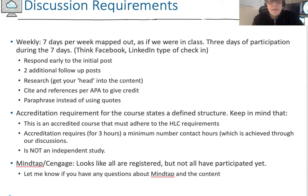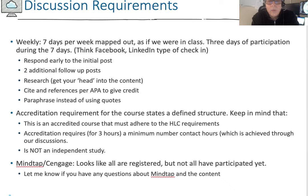We have three days of participation during the seven days, and that gives us — if you look at what they call the Carnegie units, what the accreditation requires — roughly an equivalent of 56 contact hours per the full semester. That's how they measure, at a minimum, 56 hours and up for accreditation. The three days of participation are really to keep your head in the game in terms of understanding the materials.